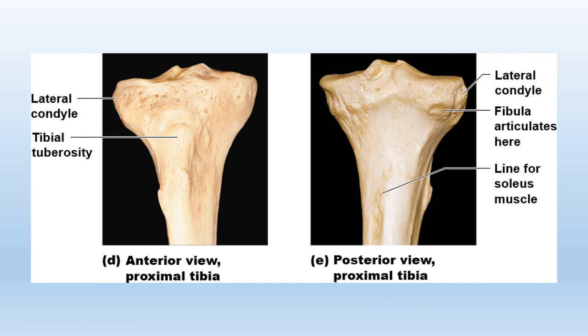Here is a zoomed in view of the proximal tibia, with anterior on the left and posterior on the right. You can see the medial and lateral condyles, the intercondylar eminence, and most importantly the tibial tuberosity.